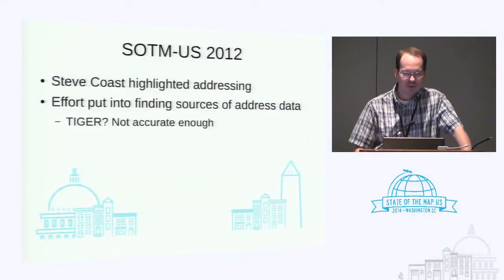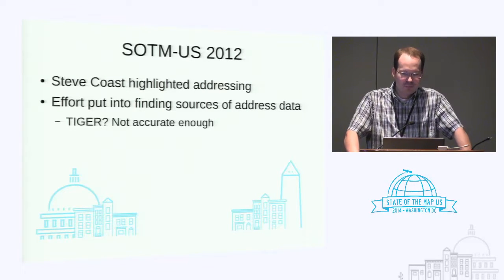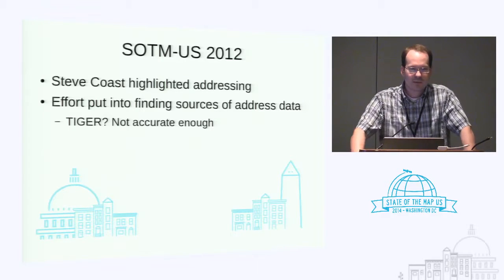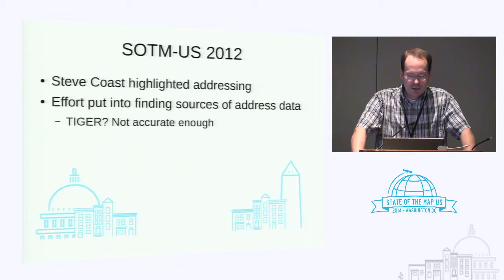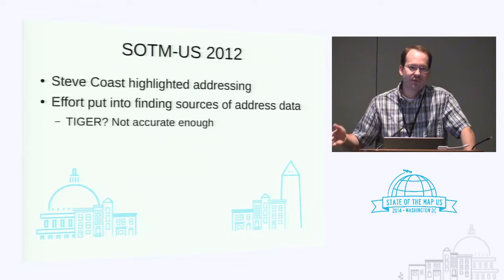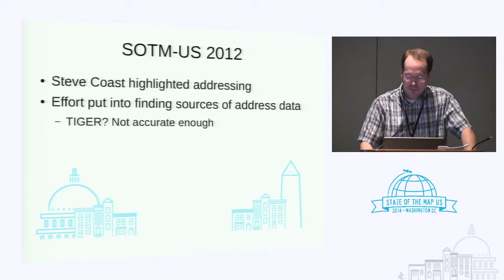There was discussion about using Tiger — the Tiger address ranges — but that really isn't a good idea because, first of all, they're inaccurate in part by law because they're not allowed to give out specific locations and addresses for privacy reasons. And Nominatim actually already uses the Tiger address ranges to fall back on if it doesn't find an address in OSM. So it was really kind of pointless to do that.